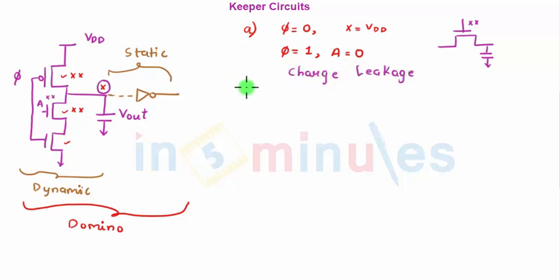Now let's see the other problem. The other thing which can happen here is when phi is equal to 0, X is equal to VDD, all is fine. When phi is equal to 1, we can think that A is 0 and X should stay to VDD.